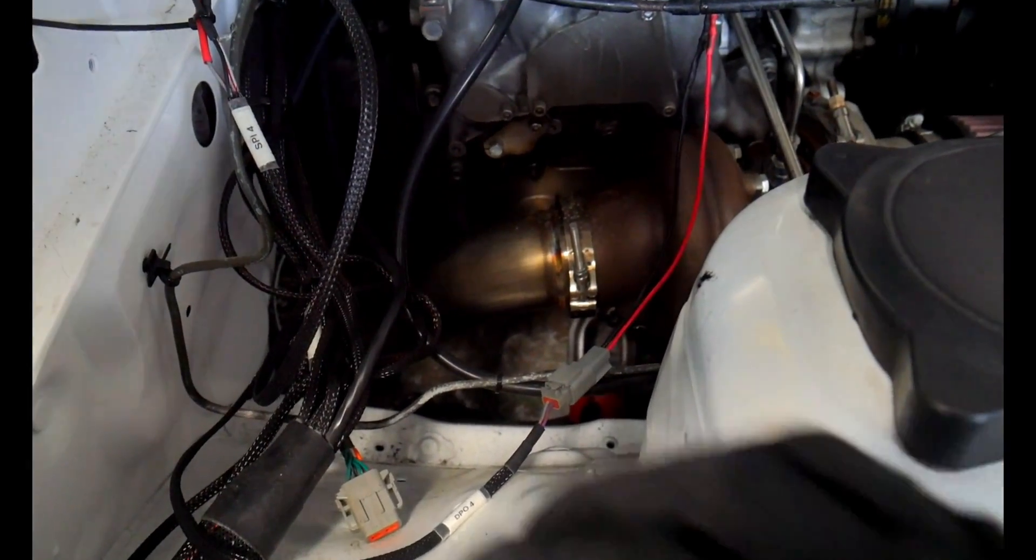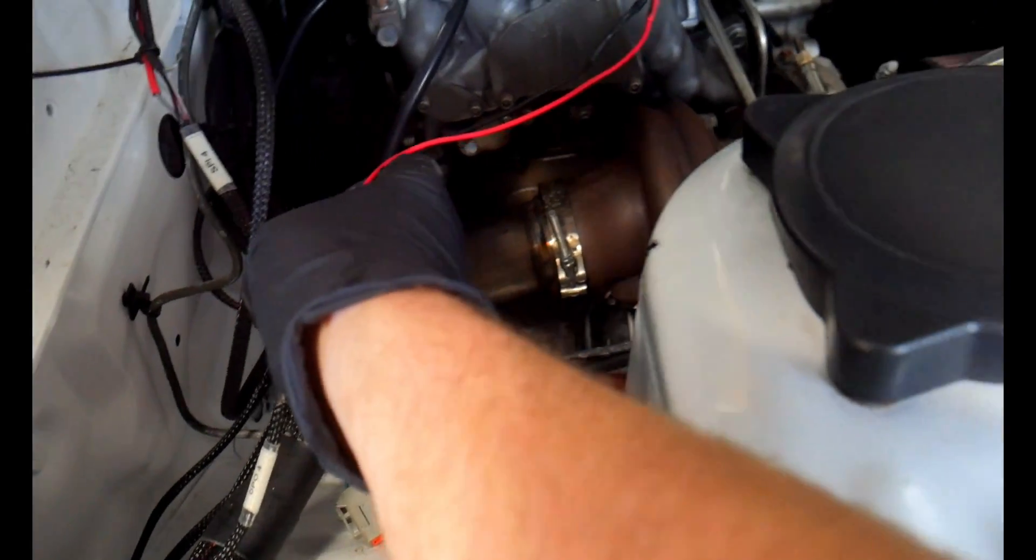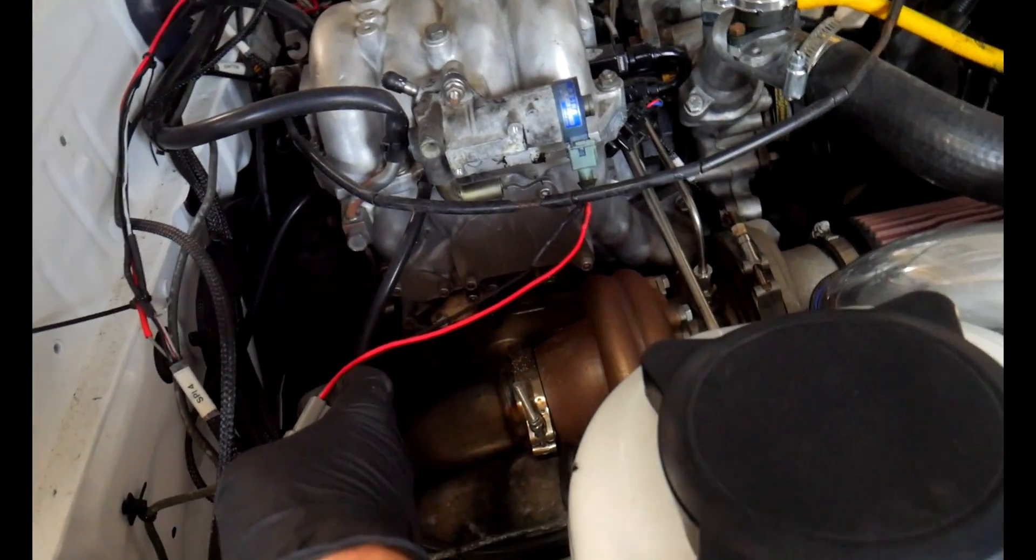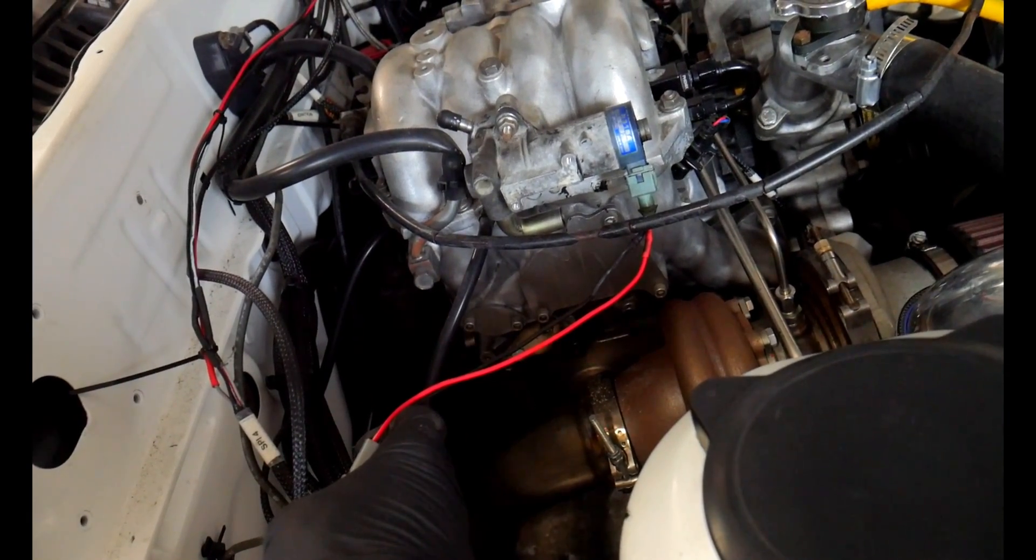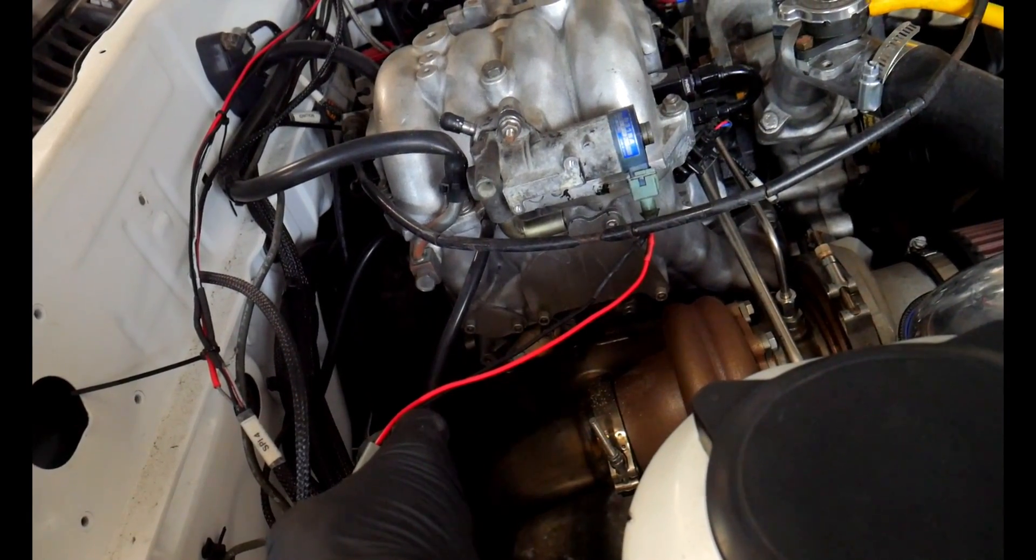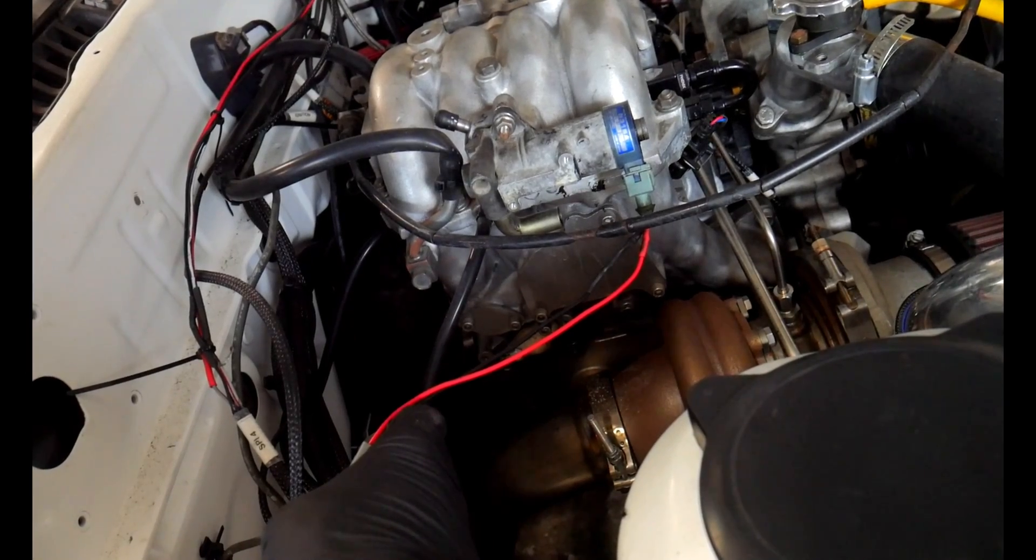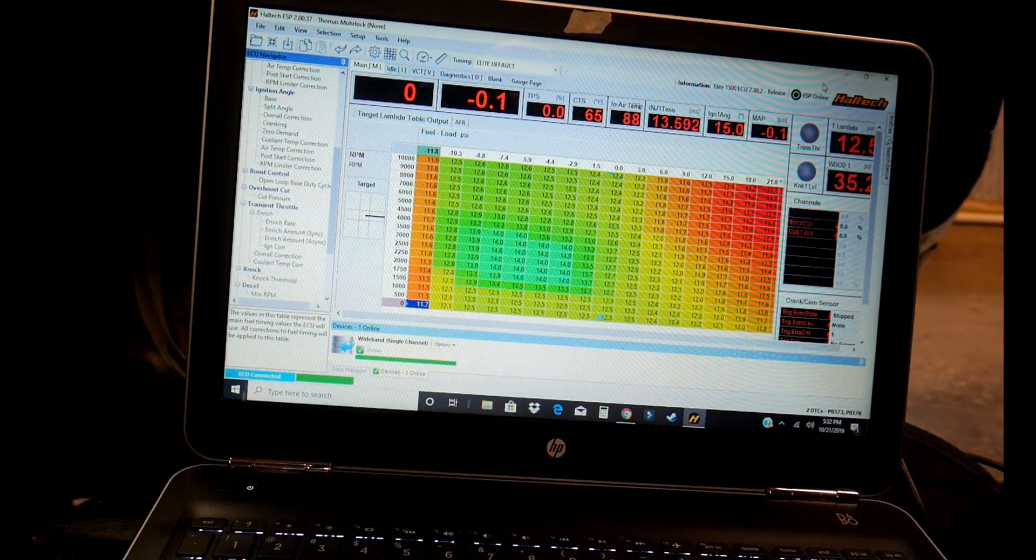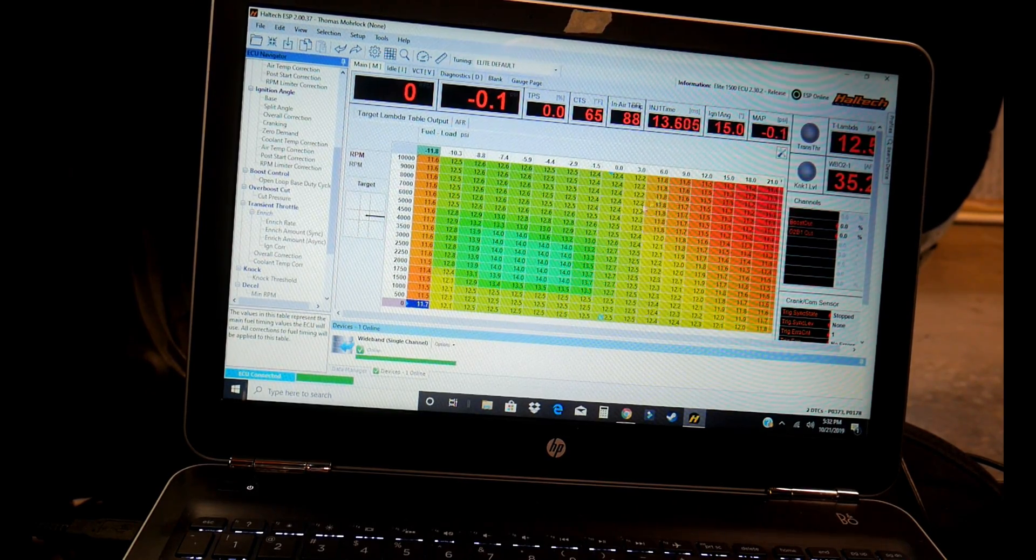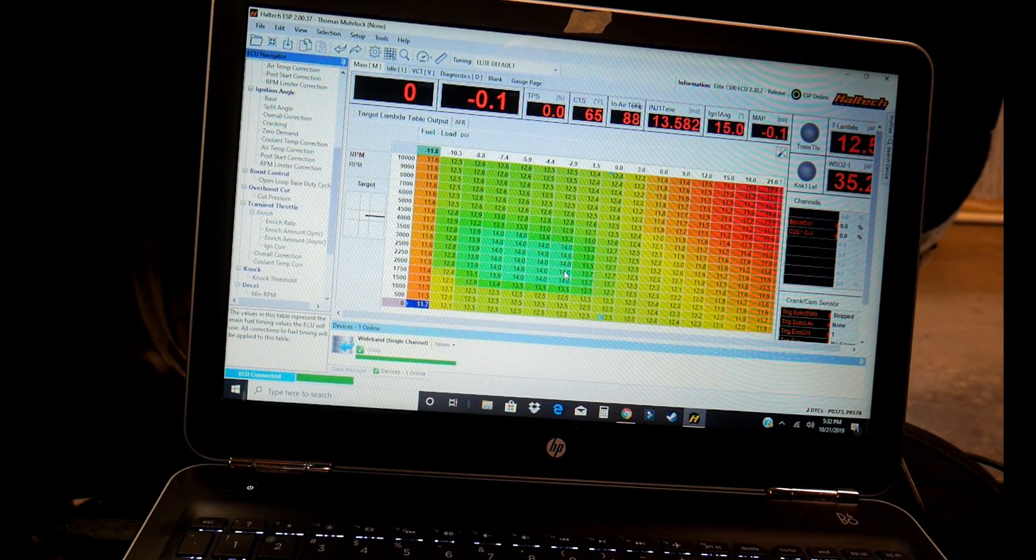All right guys, so here we go. We've got our makeshift pigtail harness connected to the factory connector for the BAC. And we're going to go ahead and switch the inside of the car and see the Haltech settings for this unit. Okay guys, so we're inside the car. We have the laptop connected to our Elite 1500 ECU.